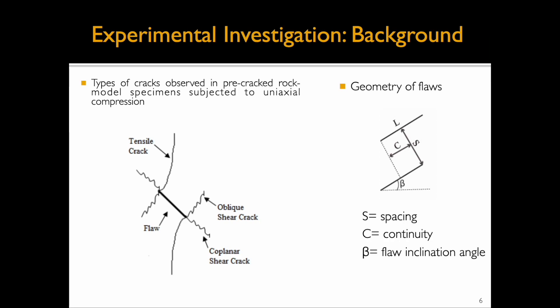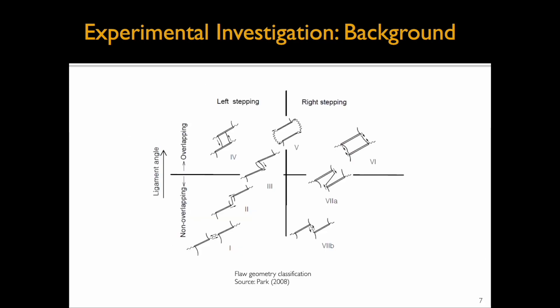The geometry of pre-existing flaws is defined by the inclination angle beta, continuity C, and spacing S of these pre-existing flaws. Flaw geometries can be classified into left and right stepping, and overlapping and non-overlapping. A geometry is characterized as right stepping when one moves along the direction of loading from the top to the bottom flaw, stepping to the right. Likewise, left stepping geometry is when, along the direction of the load, one moves from the top to the bottom flaw, stepping to the left.